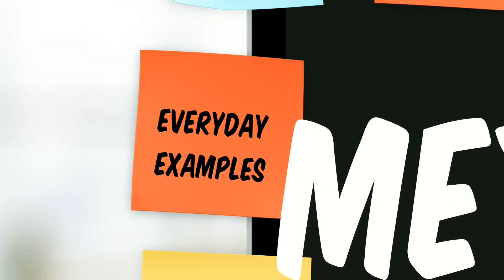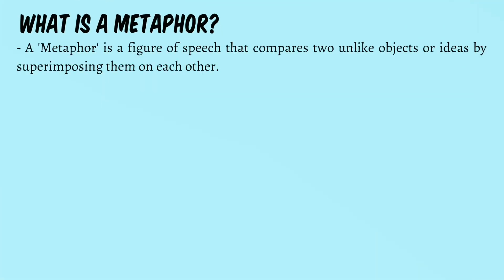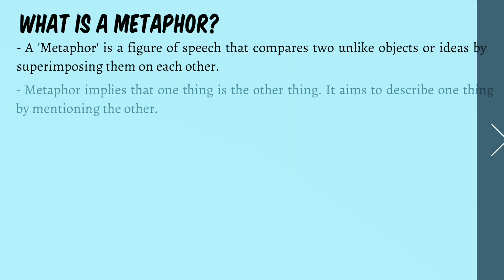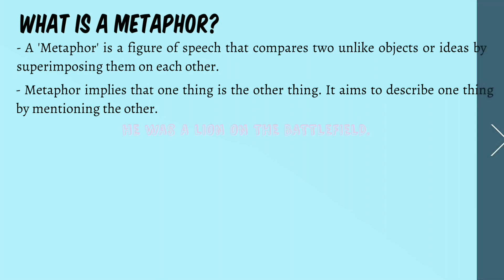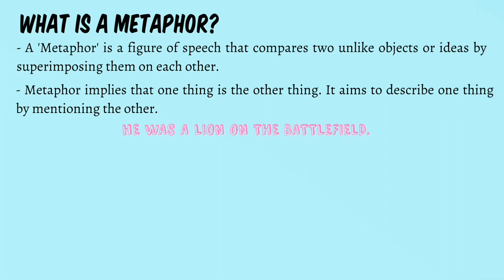Now that we've looked at some examples, let's understand what metaphors actually are. A metaphor is a figure of speech that compares two unlike objects or ideas by superimposing them on each other. Metaphor implies that one thing is the other thing; it aims to describe one thing by mentioning the other. For example, 'He was a lion on the battlefield' — the person is being compared to a lion, and the idea of a lion is superimposed onto that person to describe how brave he is.